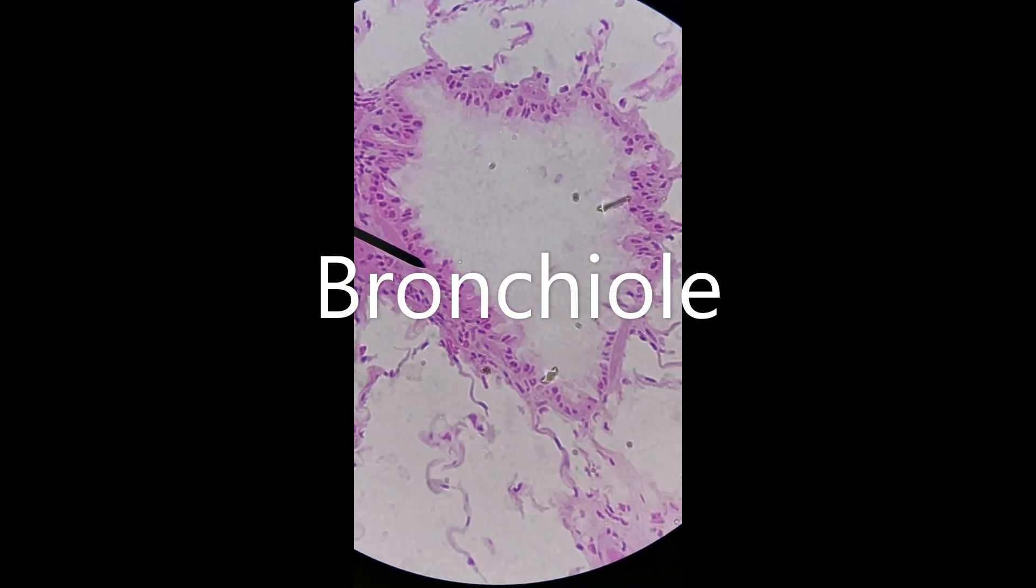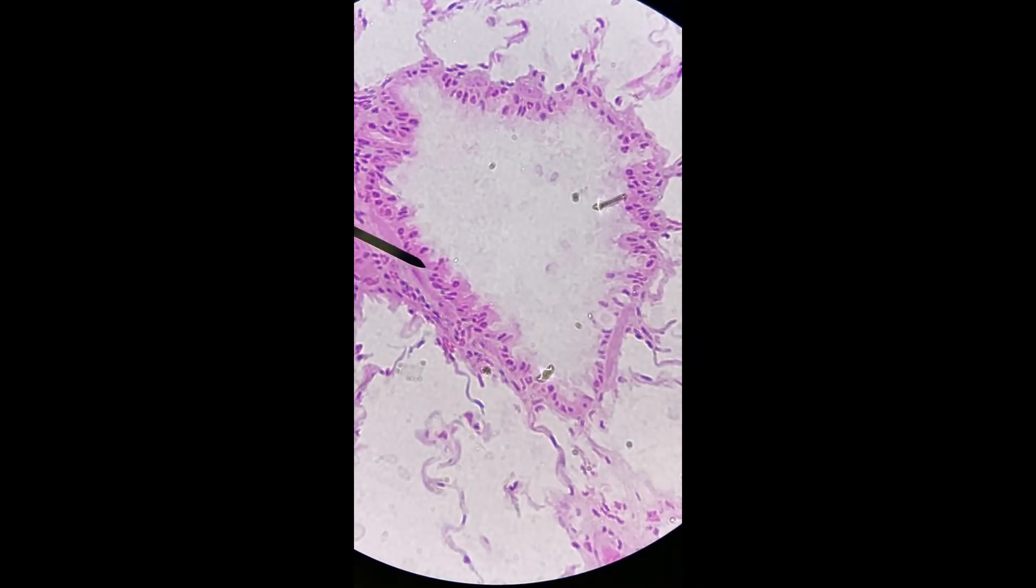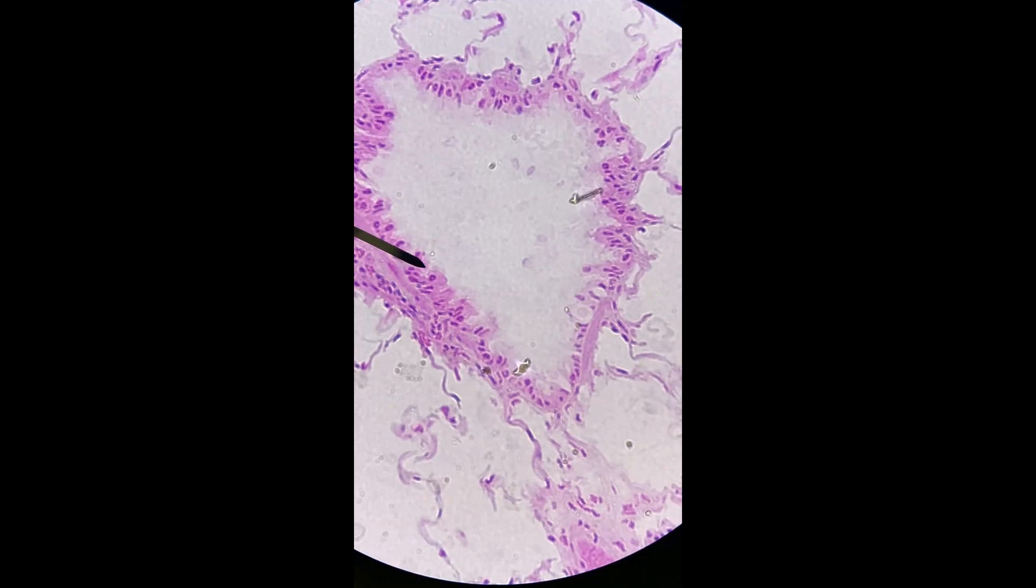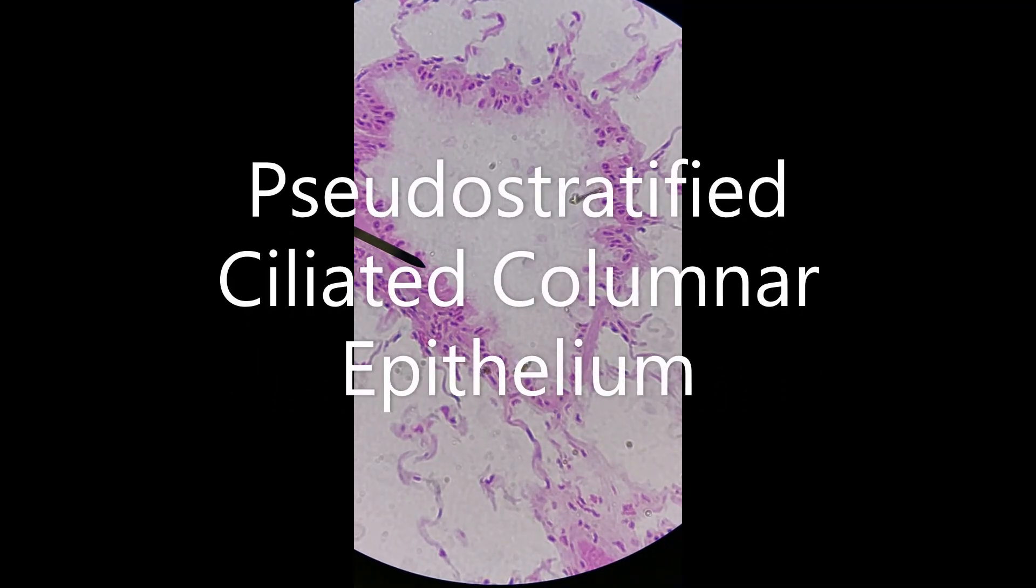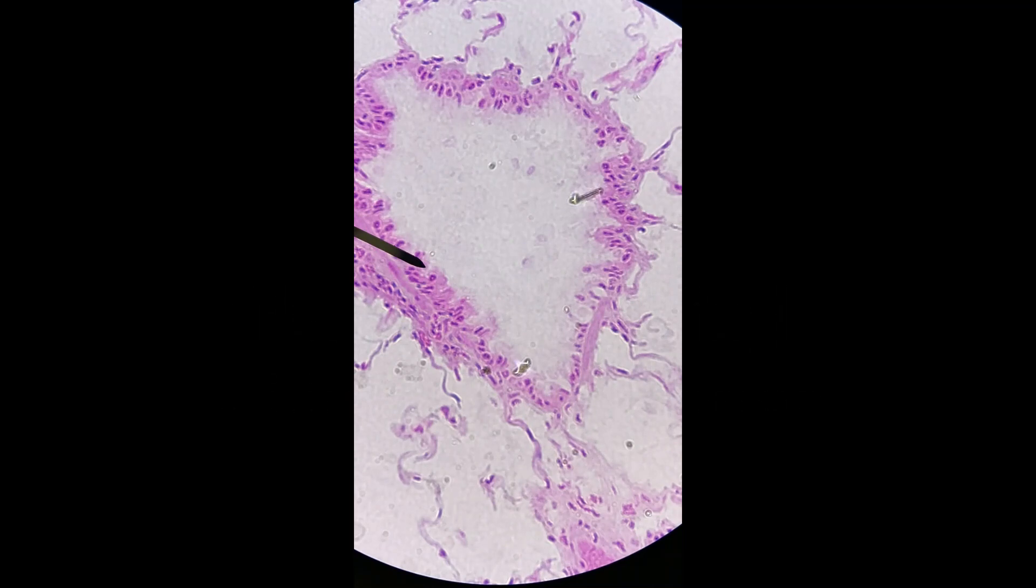That tissue on the inside that lines it, where the pointer is now, isn't a really awesome representation of it. But this is pseudostratified ciliated columnar epithelium, just like you'd have in your trachea.